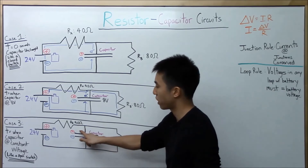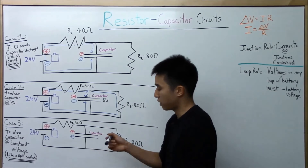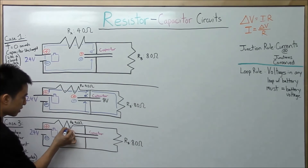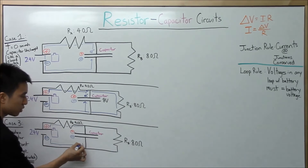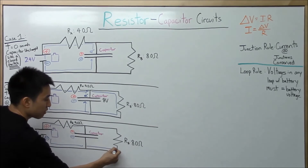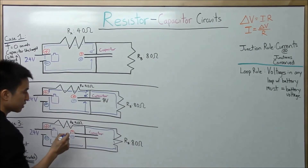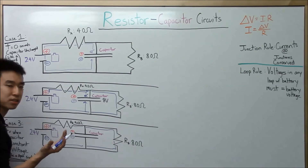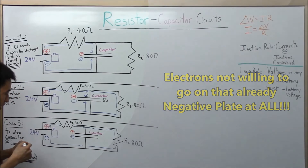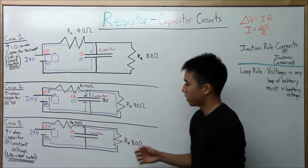Basically, electrons are still flowing through the resistor path, but there's no more flow up to the negative plate of the capacitor. Electrons would rather go through this side — at this point it has less resistance. The capacitor is maximally charged, so you can't force any more electrons to go through there.